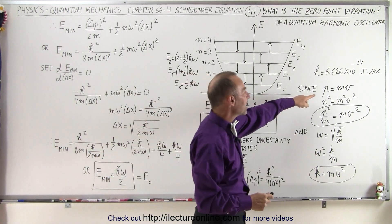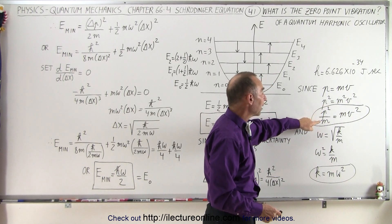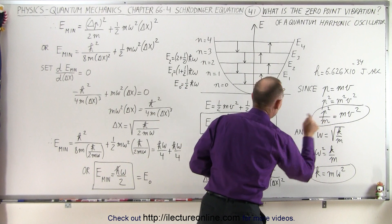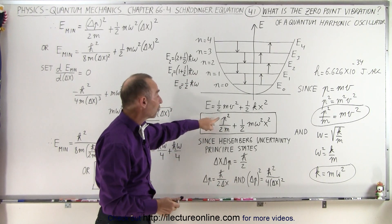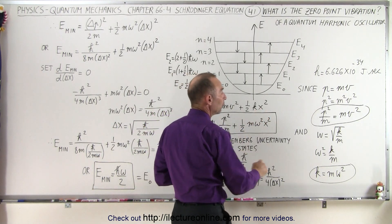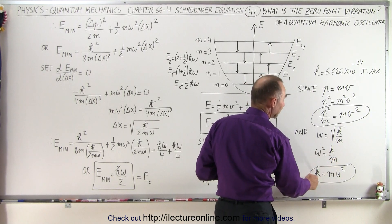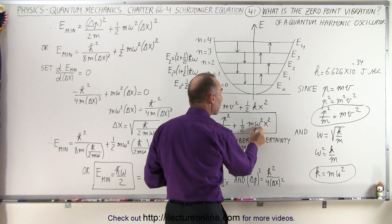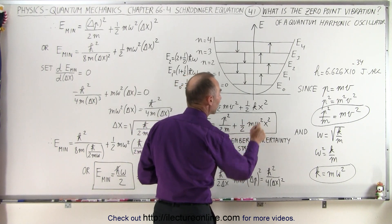If we say that p, the momentum, is equal to mv, so that p squared is equal to m squared v squared, or p squared divided by m is equal to m times v squared, we can replace mv squared by p squared over m. So instead of writing one-half mv squared, we write the kinetic energy as p squared divided by 2m. Also, since omega squared equals k divided by m, k is equal to m times omega squared, so the potential energy becomes one-half m omega squared x squared.